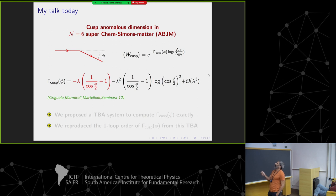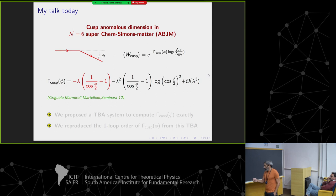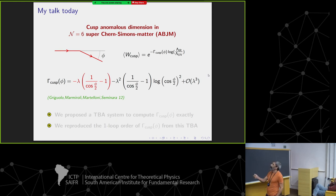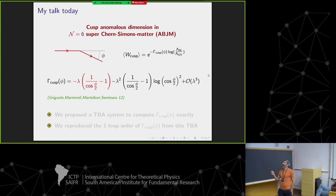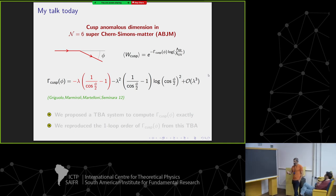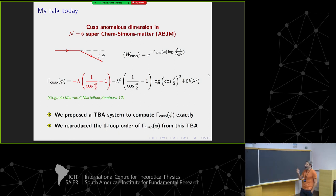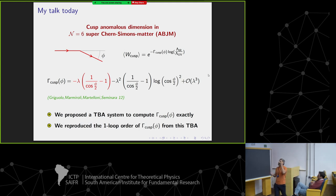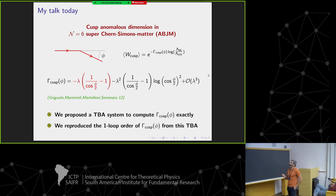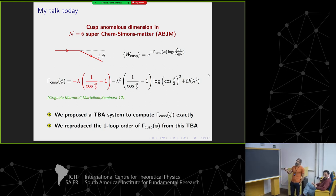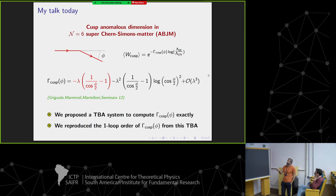You can compute this cusp anomalous dimension perturbatively in the field theory — that was done by an Italian group many years ago. What I'm going to tell you today is how to compute the same quantity, not by perturbative computation, but by proposing a thermodynamic Bethe ansatz that you can use because this problem turns out to be integrable. This TBA system will compute the cusp anomalous dimension exactly as a function of the coupling. We were at least able to reproduce and test our proposal by reproducing the one-loop order.